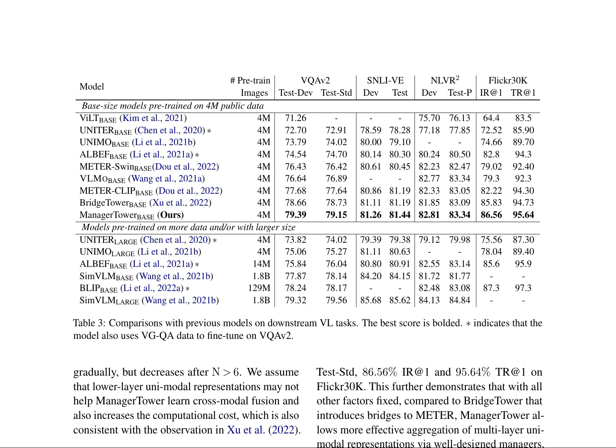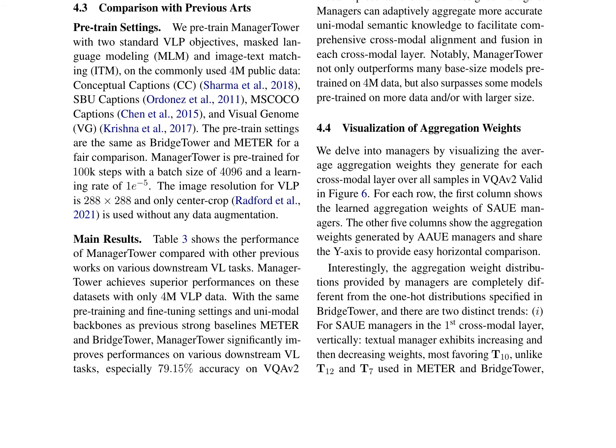In the realm of visual language processing, Manager Tower introduces a novel architecture that facilitates adaptive aggregation of multi-layer unimodal semantic knowledge for comprehensive cross-modal representation learning. This paper presents a comparative analysis with previous models on various downstream VL tasks, showcasing superior performance on datasets such as VQA V2, SNLI-VE, NLVR2, and Flickr 30K. Manager Tower's performance surpasses many base-size models pre-trained on 4M data and even outperforms some models pre-trained on more data and/or with larger size. The visualization of aggregation weights demonstrates that the introduced managers can adaptively generate different aggregation weights for different tokens in different samples.